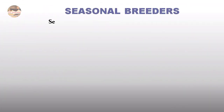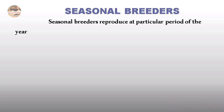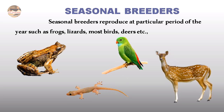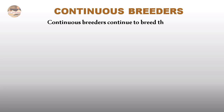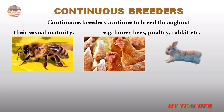Seasonal breeders reproduce at a particular period of the year. Examples are frogs, lizards, migratory birds, deer, etc. — they will reproduce at a particular season. Continuous breeders continue to breed throughout their sexual maturity. Examples are honeybees, poultry, rabbit, etc.